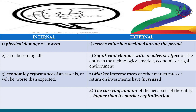Internal indications include: physical damage of the asset, asset becoming idle, or economic performance declining — then we test the asset for impairment. External indications include: asset's market value declining, significant changes with adverse effect on the entity in the technological, market, economic, or legal environment, changes in market interest rate, or market capitalization of the entity being lower than the carrying amount of its net assets.